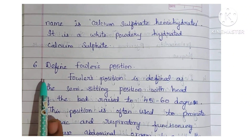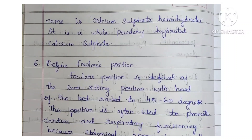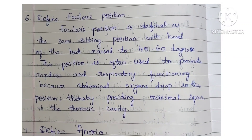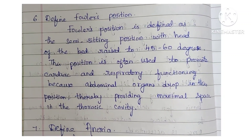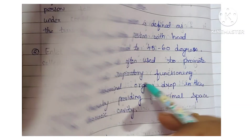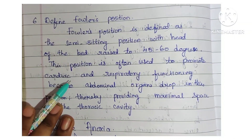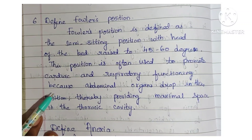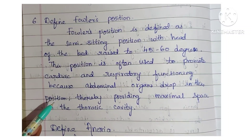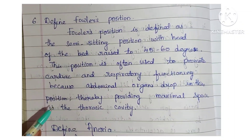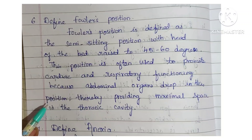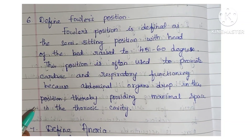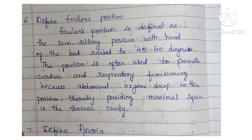Next question: define Fowler's position. Fowler's position is defined as the semi-sitting position with the head of the bed raised to 45 to 60 degrees. This position is often used to promote cardiac and respiratory functioning because abdominal organs drop in this position, thereby providing maximal space in the thoracic cavity.